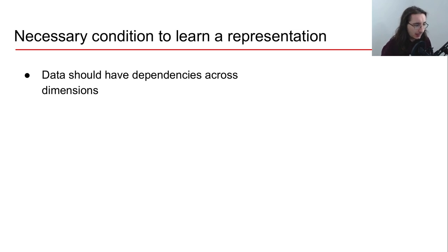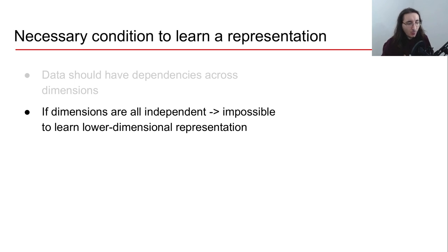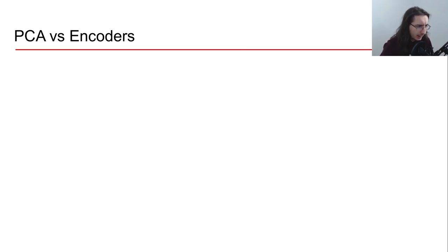In order for the encoder to be effective at compressing data, a certain condition must be true: the data should have dependencies across its different dimensions. In other words, if the different dimensions of the data are all independent, it's basically impossible to learn a lower-dimensional representation, because there's no way of capturing the most important attributes without losing a lot of information.